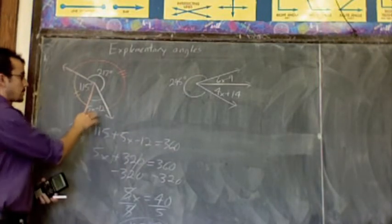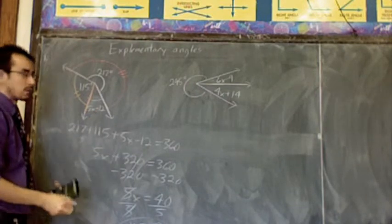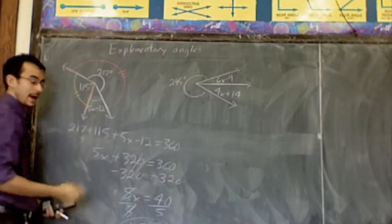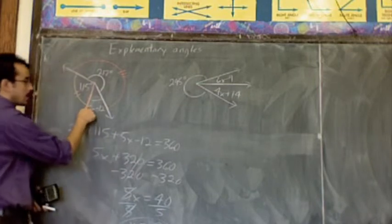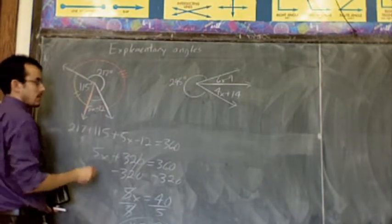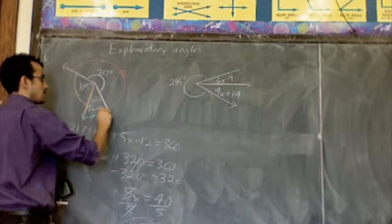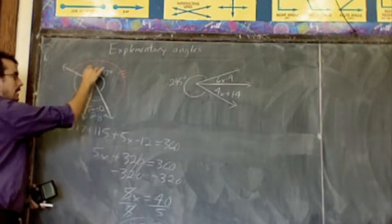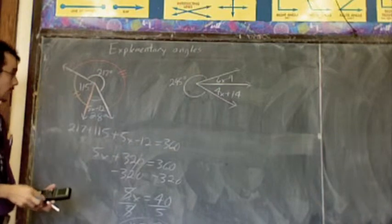So if you want to check that this is right, you're going to plug it in and make sure that these three numbers add up to 360. So let's see. 5 times 8, that's 40. 40 minus 12, that's 28. So this angle's 28 degrees. This angle's 115. This angle's 217.